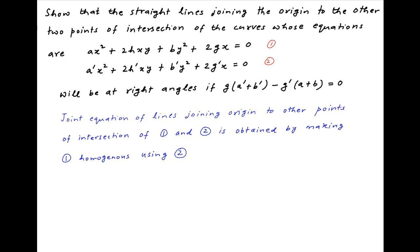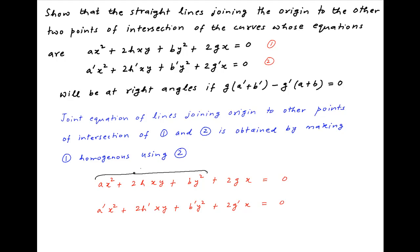The equation of the first curve is ax² + 2hxy + by² + 2gx = 0, and the equation of the second curve is a'x² + 2h'xy + b'y² + 2g'x = 0. Notice that in both equations the first three terms are of degree 2 and the last term is of degree 1.